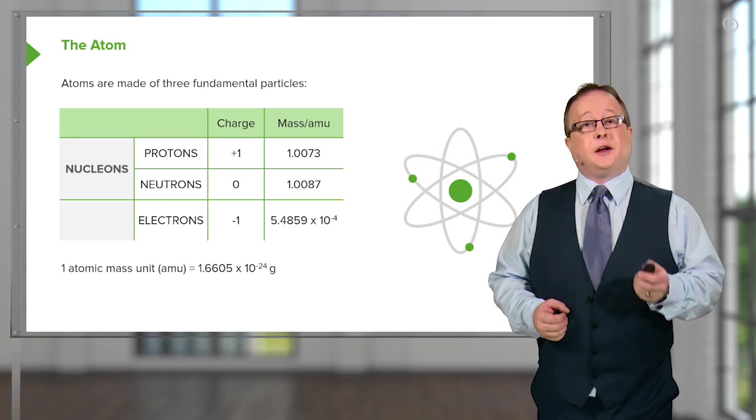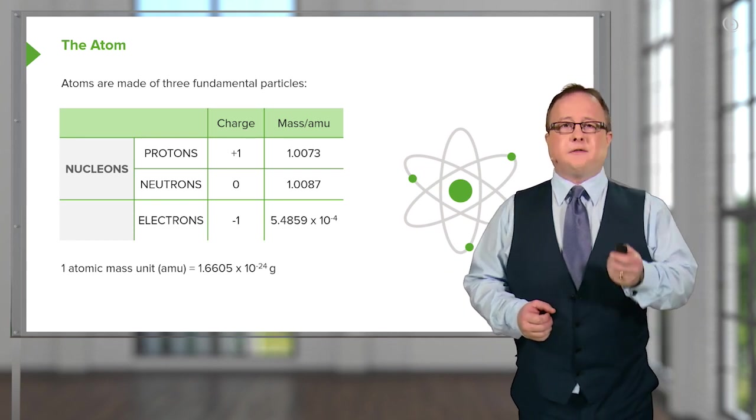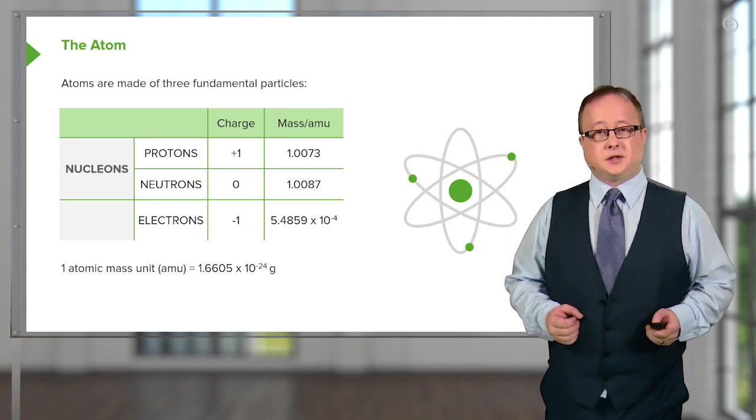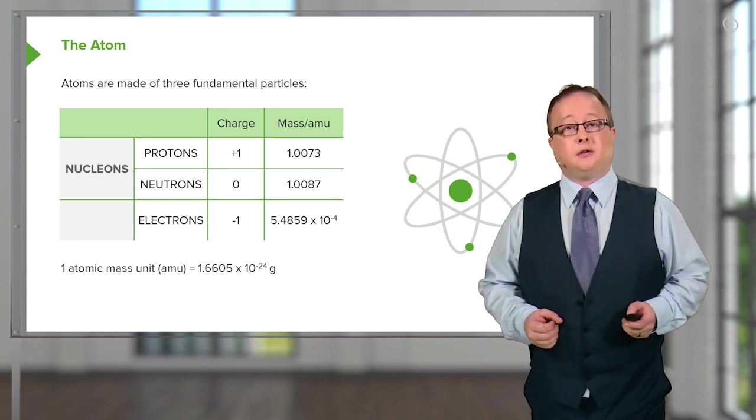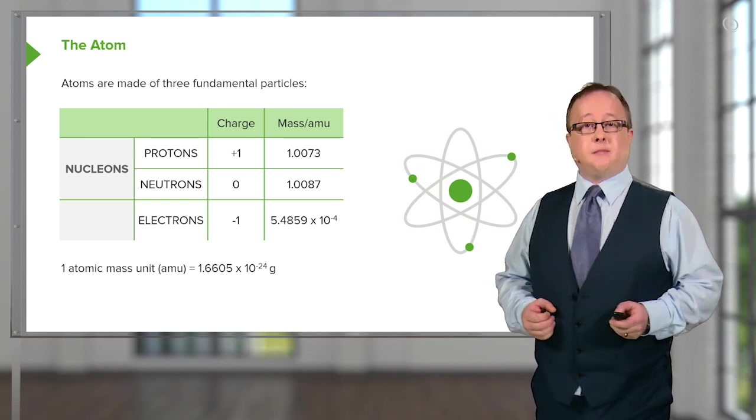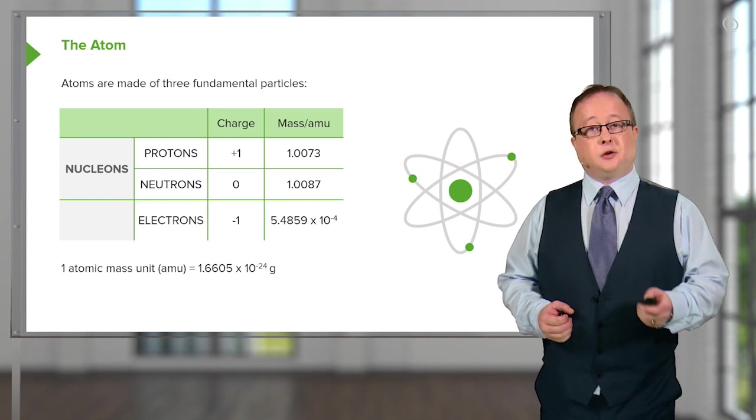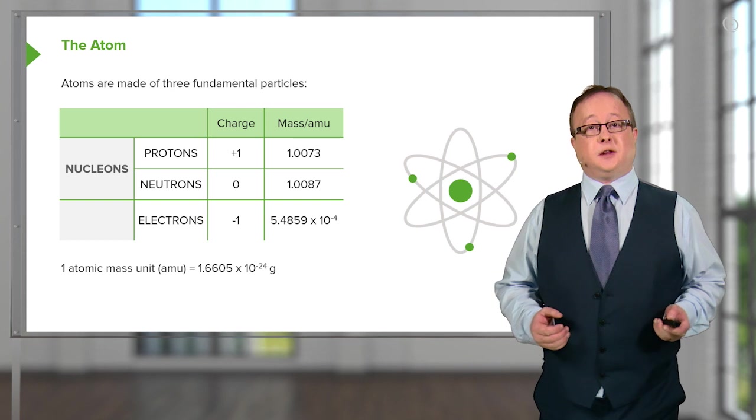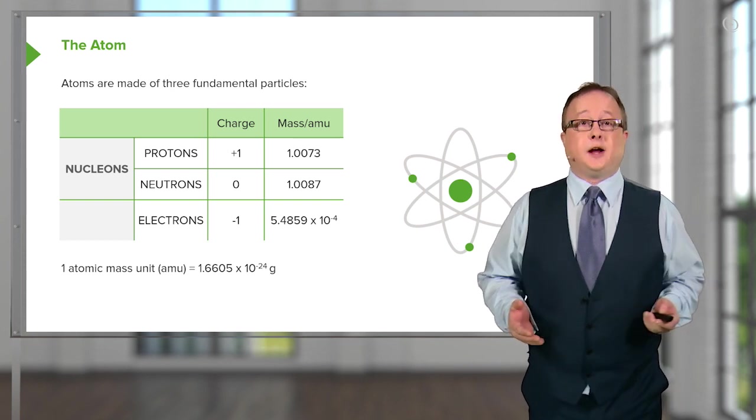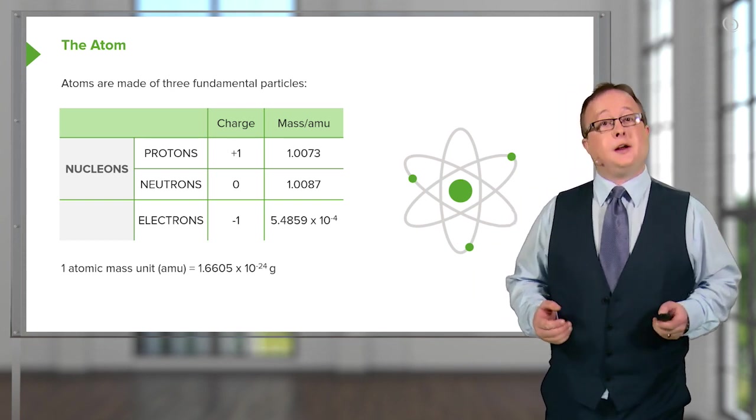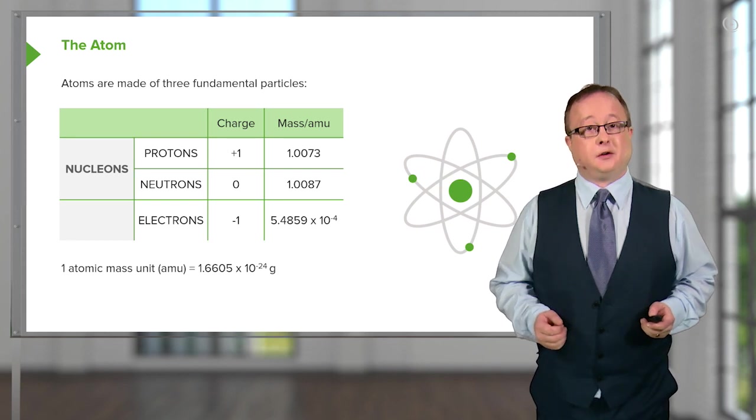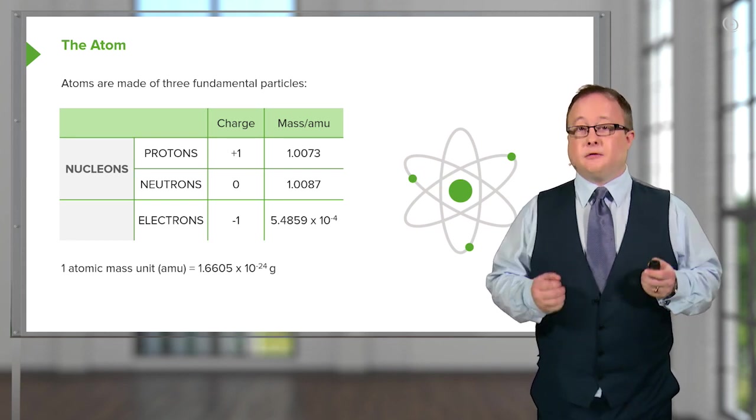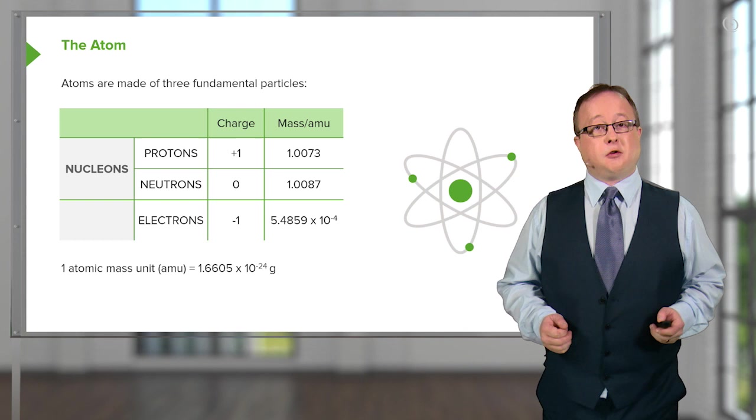Electrons have a charge of minus one, but they have a substantially smaller mass. The mass of an electron is given relative to an AMU of 5.48 times 10 to the minus 4. However, the reality of this in kilograms is that an electron has a mass of 9.11 times 10 to the minus 31 kilograms. So very much smaller than those nucleons.